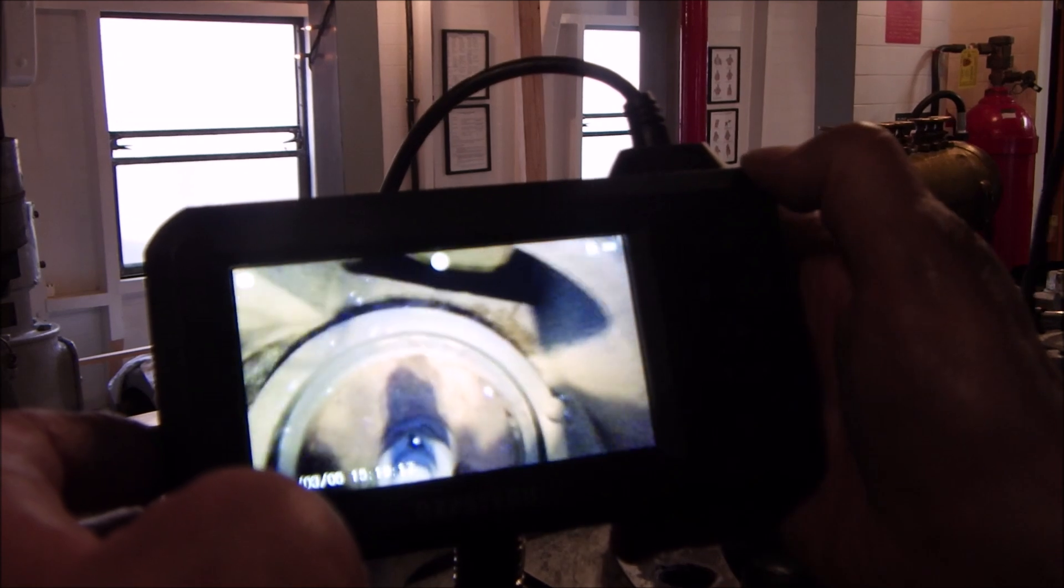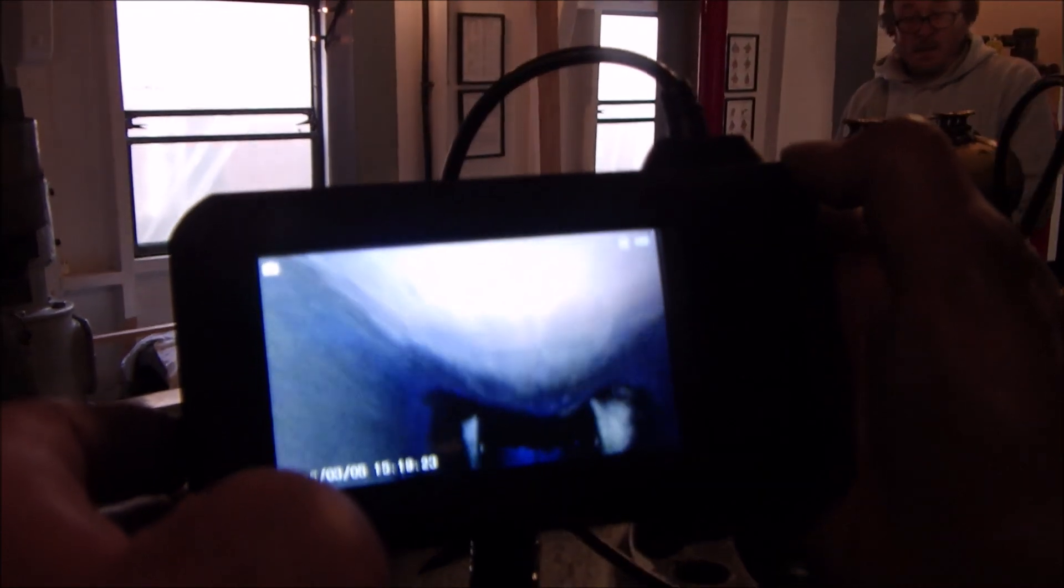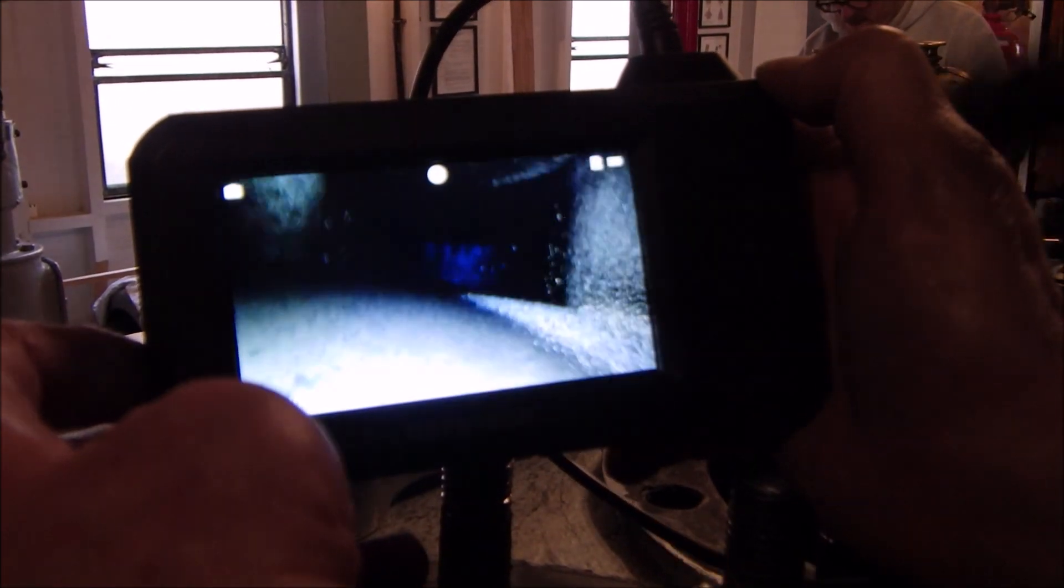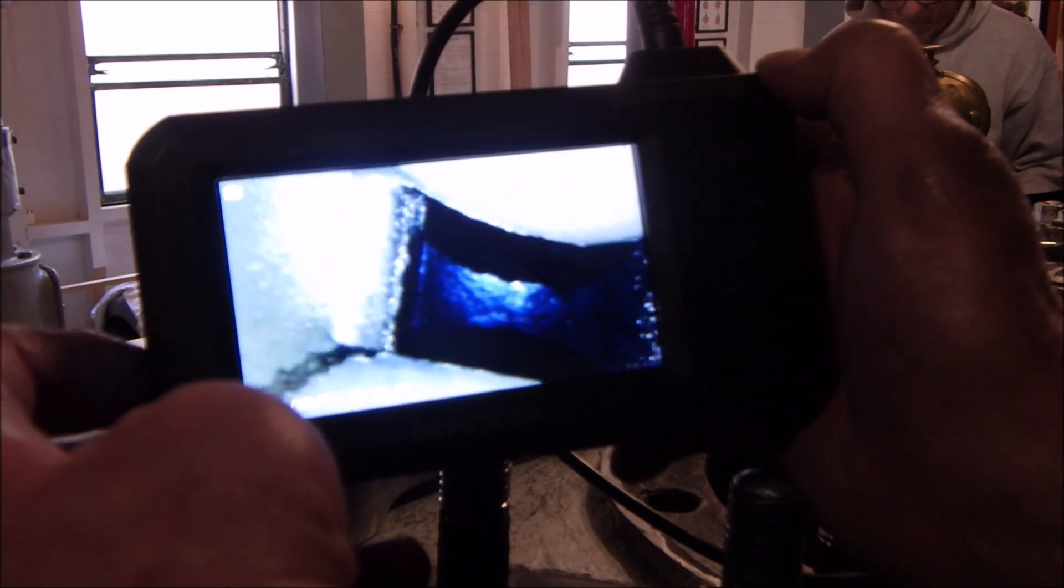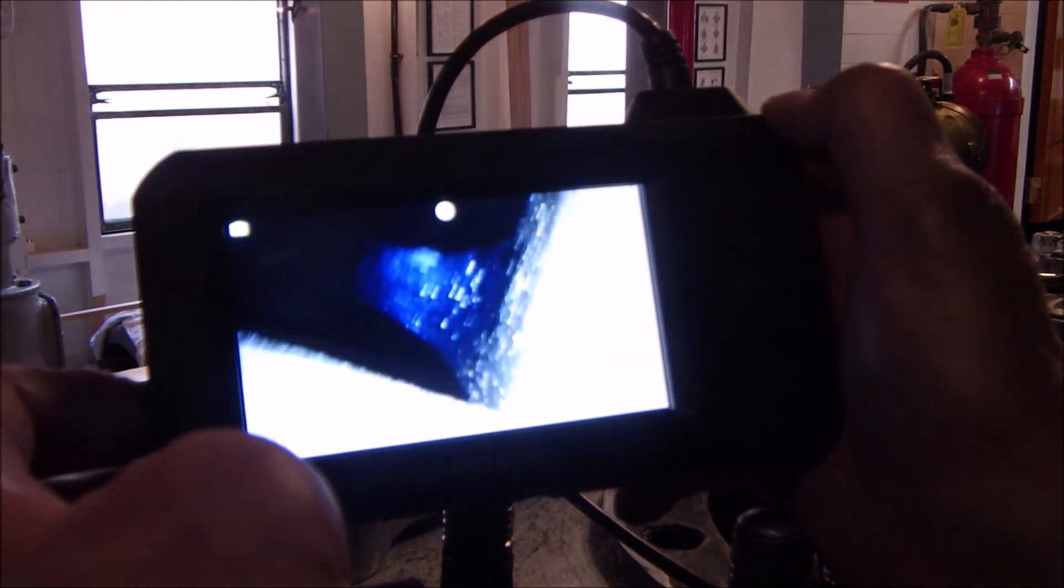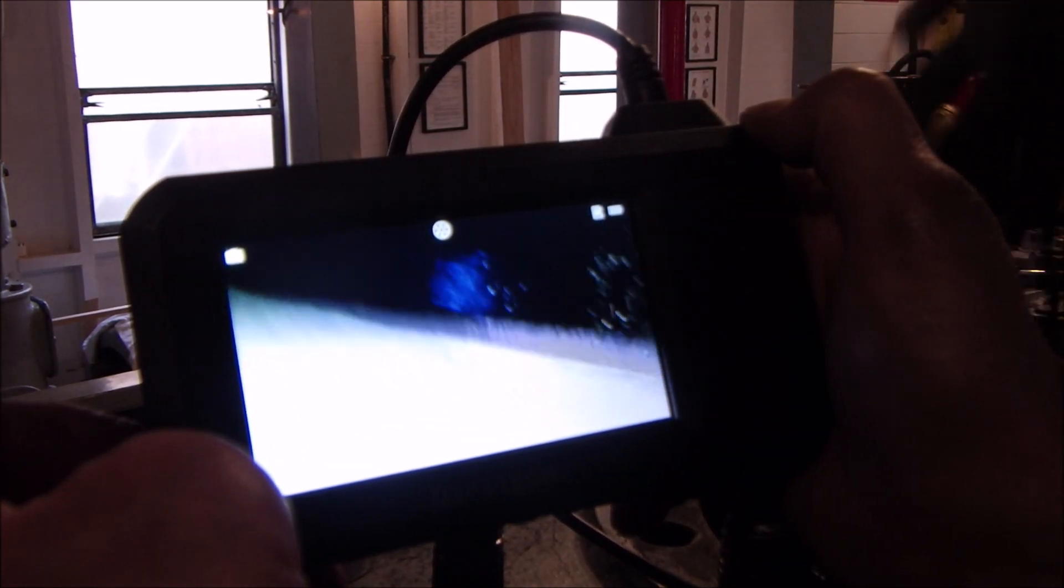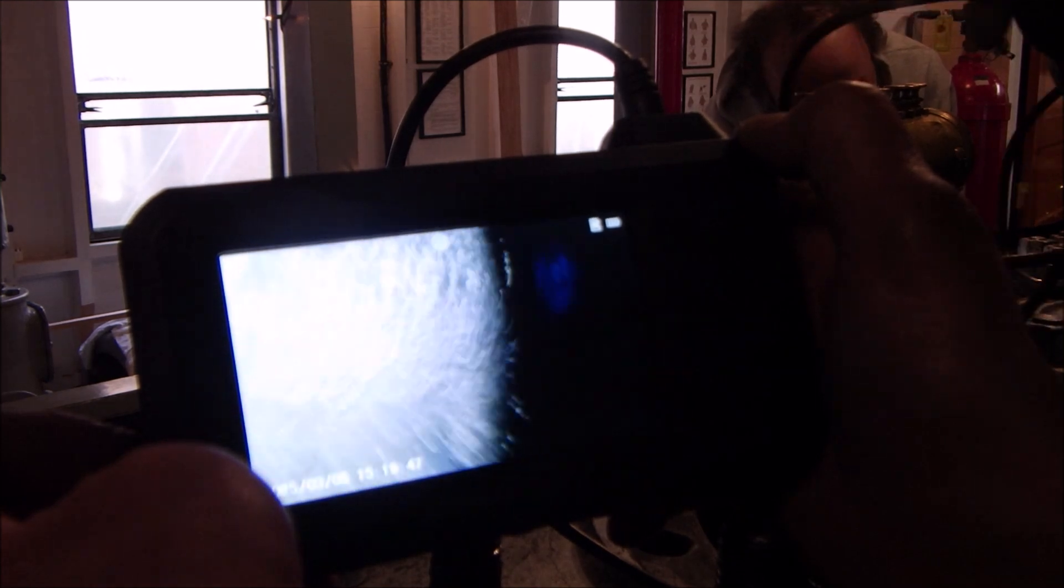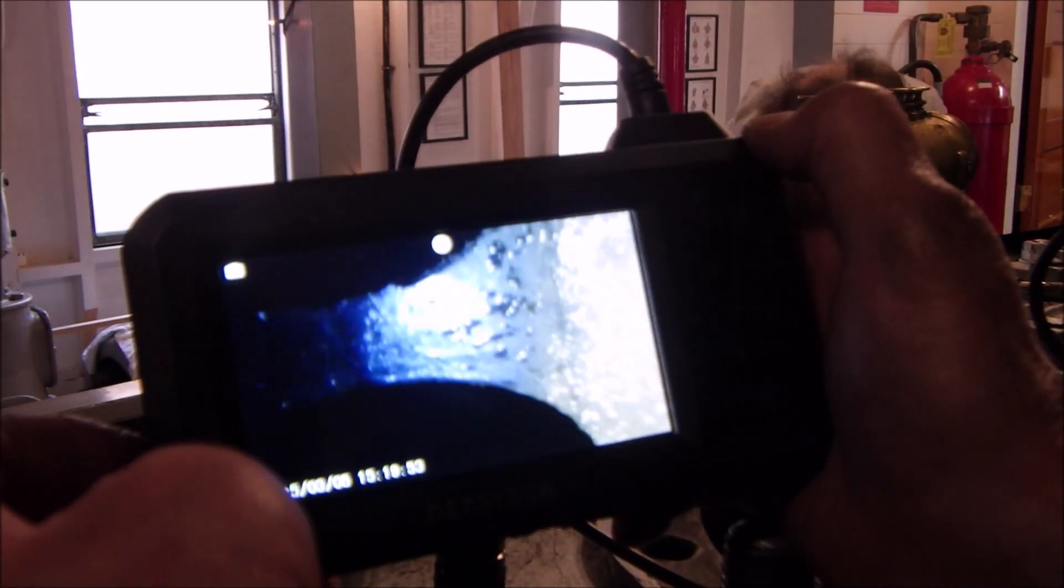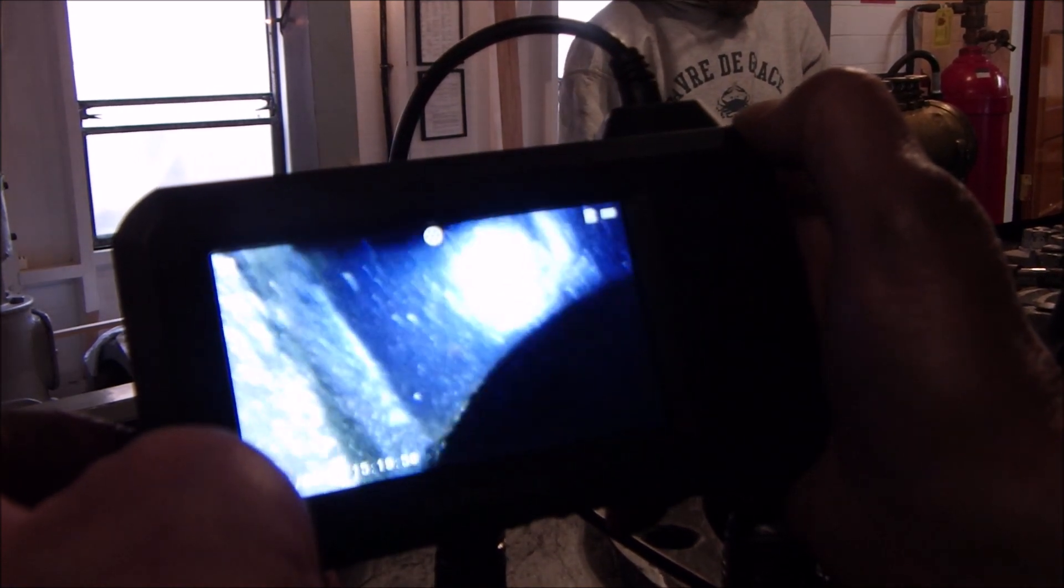So there you can see the top of the IP valve piston. And then this channel would take steam into the cylinder. I think this might be the exhaust from the HP. And we're looking to see if there's any debris, making sure there's nothing that might get sucked into the pistons. This boroscope was the best $115 I've spent. I mean there's no other way to look down there.